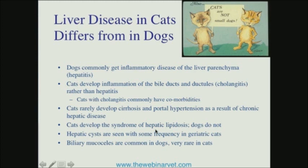Cats, of course, like to develop hepatic lipidosis when they don't eat — this is a fairly routine complication that we see. Dogs don't do this; there is no equivalent syndrome of hepatic lipidosis in dogs. Dogs get fat accumulation in the liver when they get obese and stop eating, but they don't develop the clinical syndrome where they go off food and get yellow. So this is a cat issue and dogs don't have the equivalent.